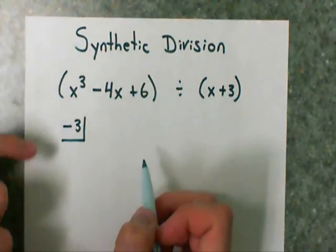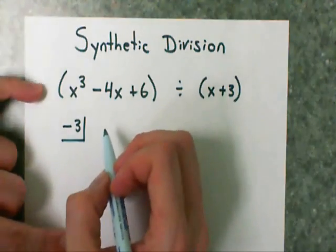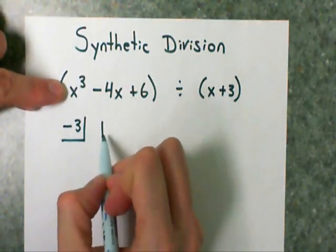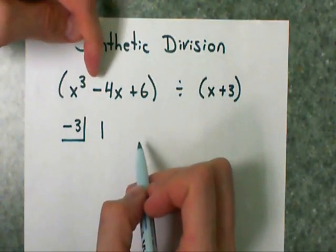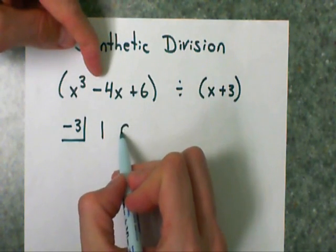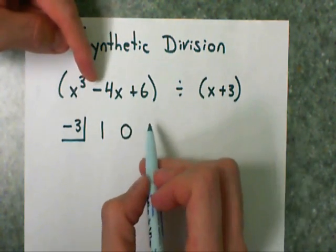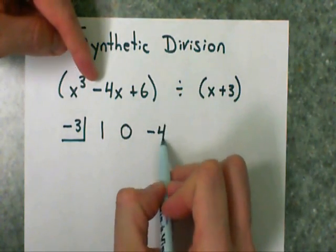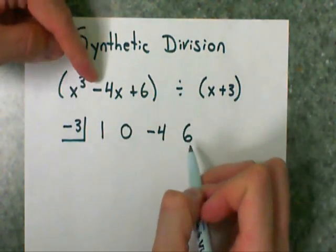I'm going to use the coefficients, but I want to use all the powers, so I do have a 1 on the x to the 3rd, but I don't have an x squared, so I'm going to place a 0 on my x squareds. Next, I have a negative 4 on my x and a 6 as my constant.